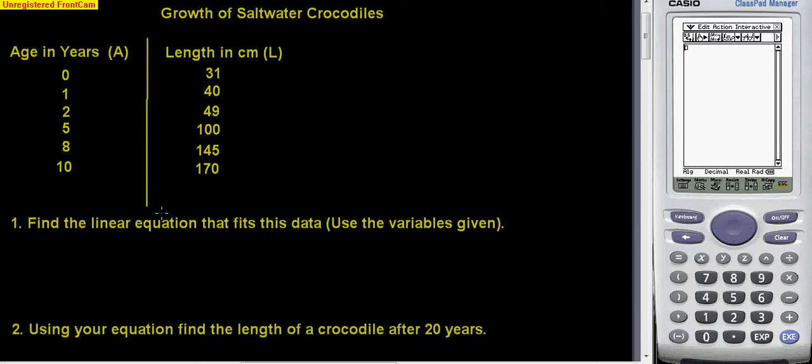First thing we have to do, number one, find the linear equation that fits this data. Well, that is a calculator activity, and into list one we will put the age in years, or these will be the x values, and in list two we will put the length in centimeters. So away we go.